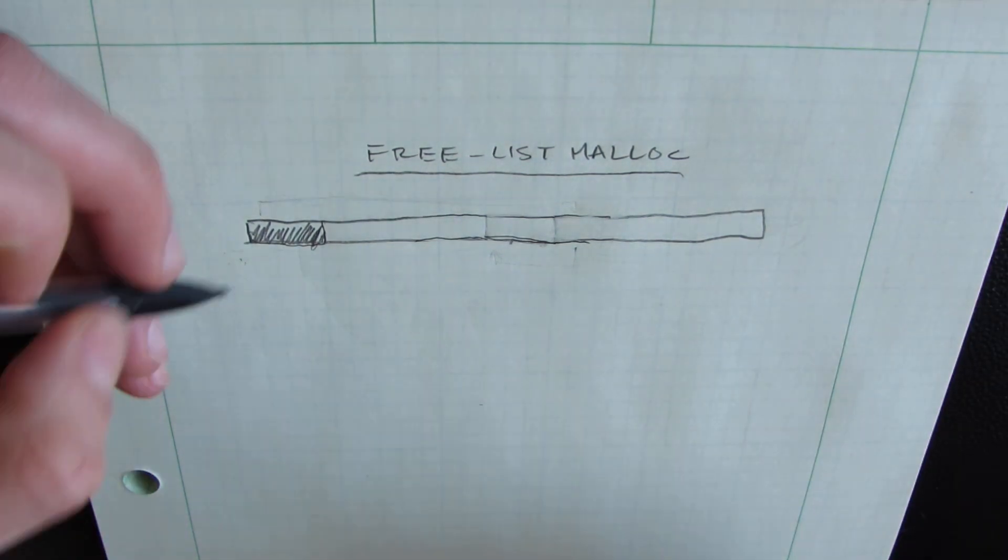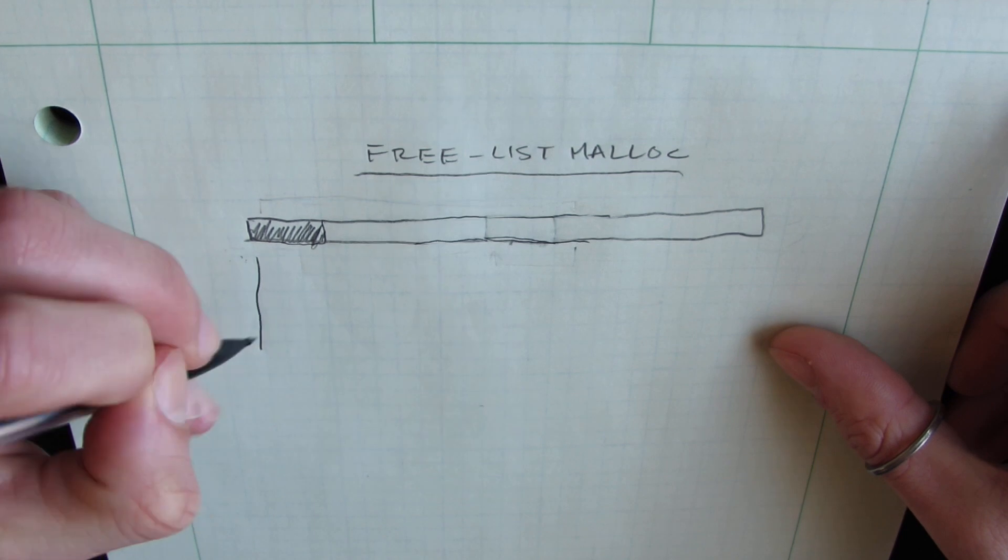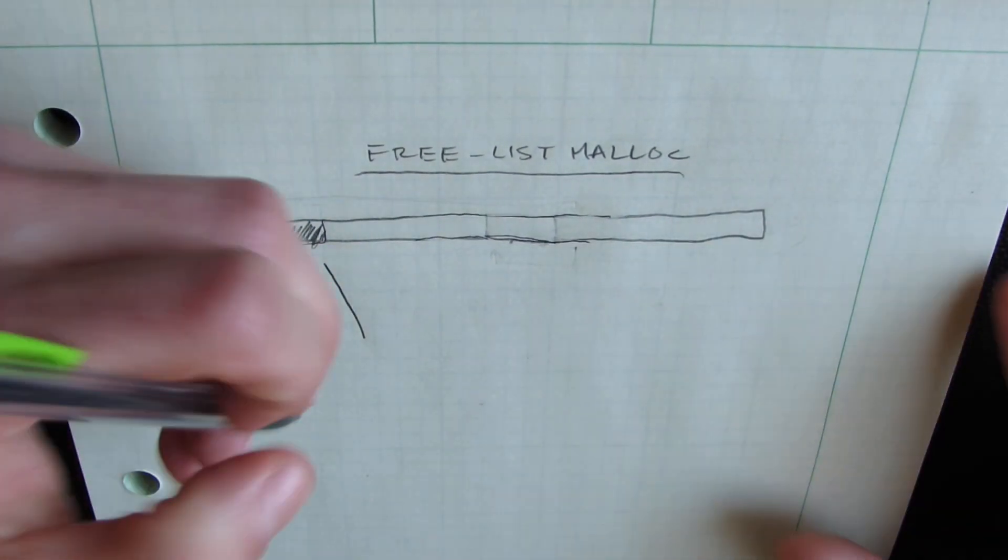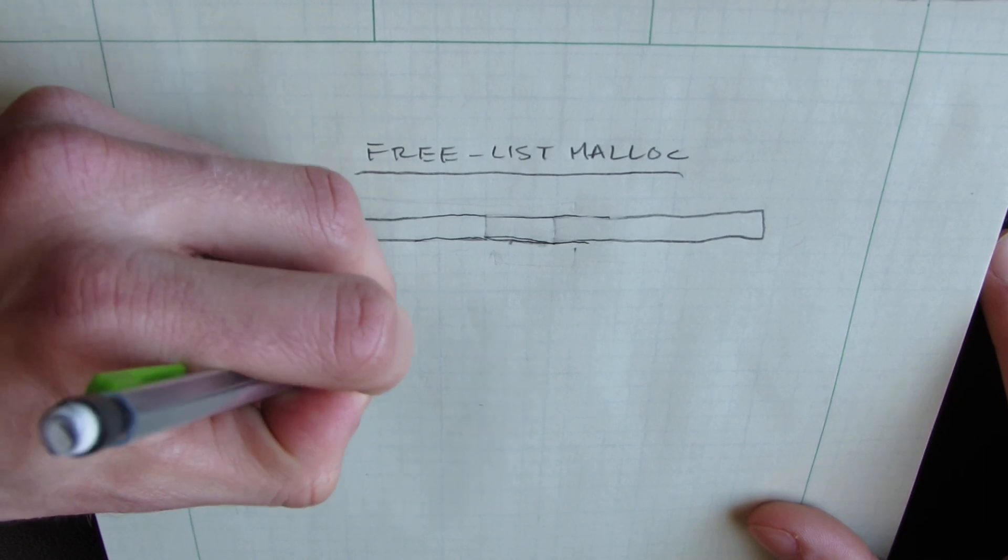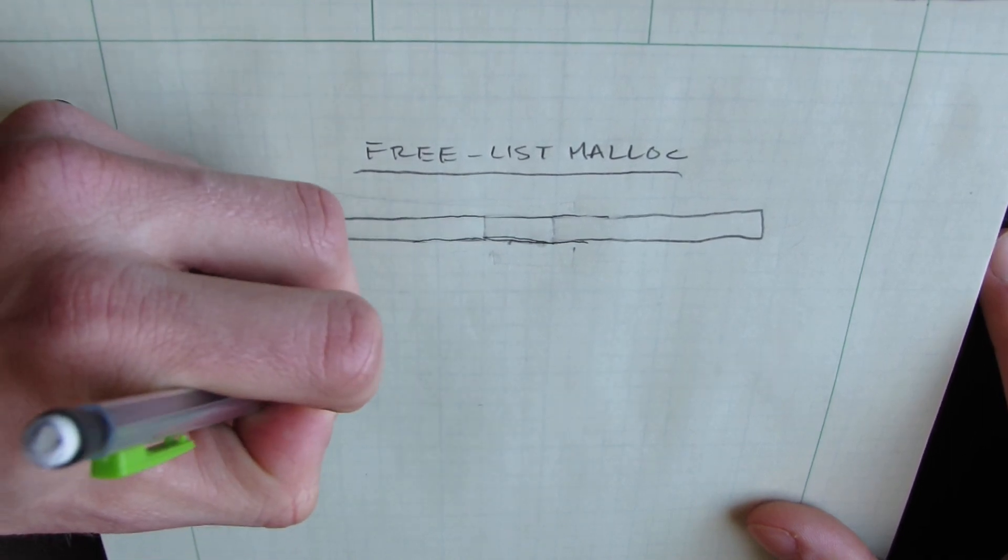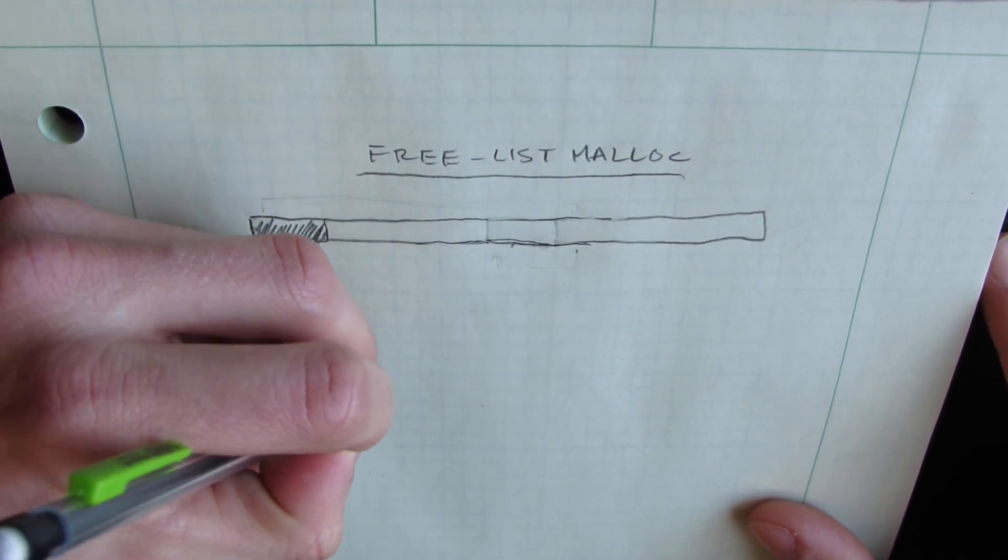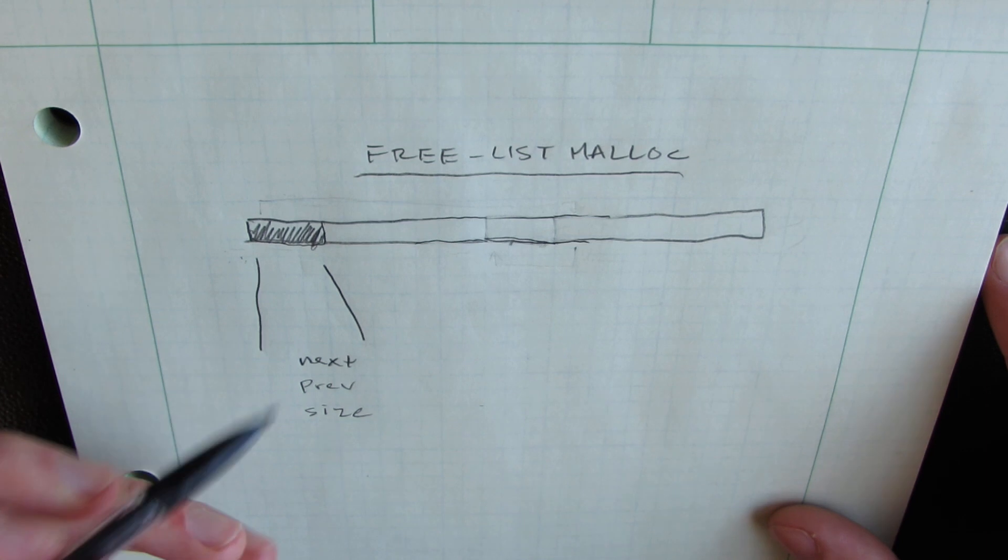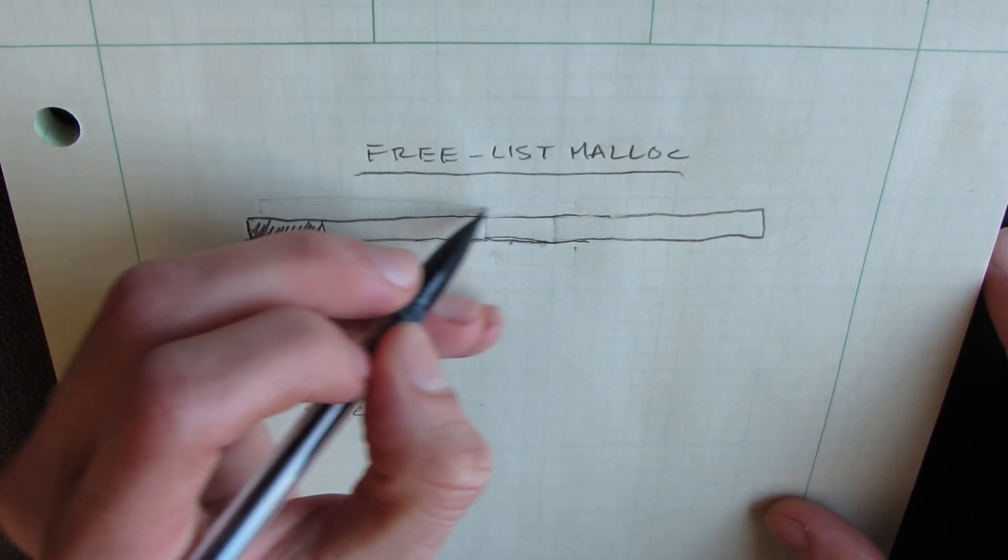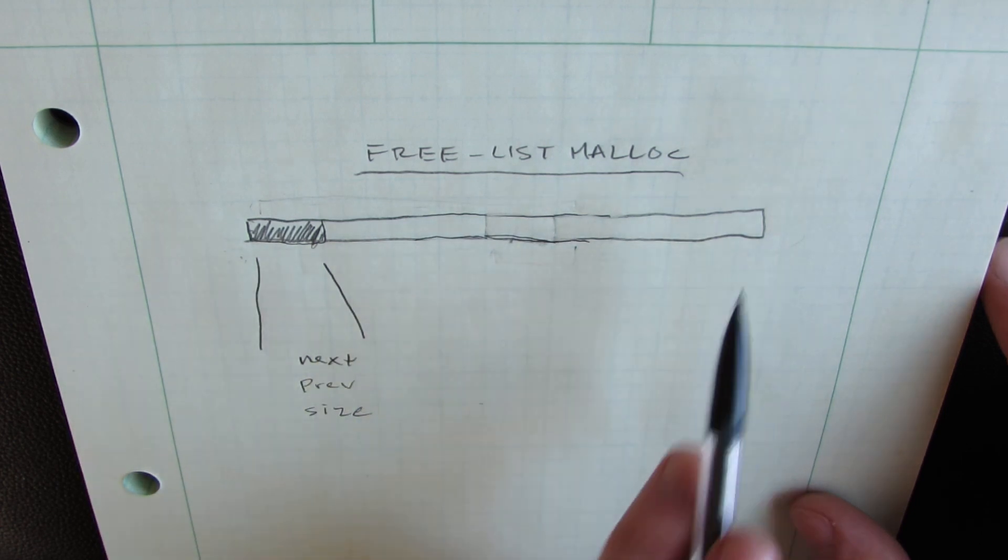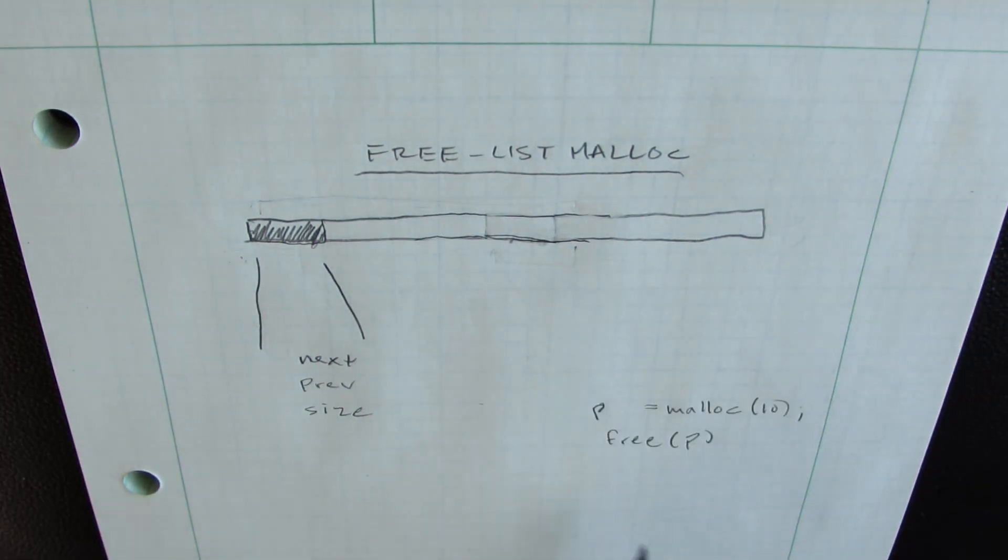And now, what actually goes into this linked list header? Well, we need a next pointer. And let's just also say we have a previous pointer. So this will be a doubly linked list. And we also need to know the size. Now here, size is referencing the size of this entire chunk. So how much memory is available in this linked list node, this free list?